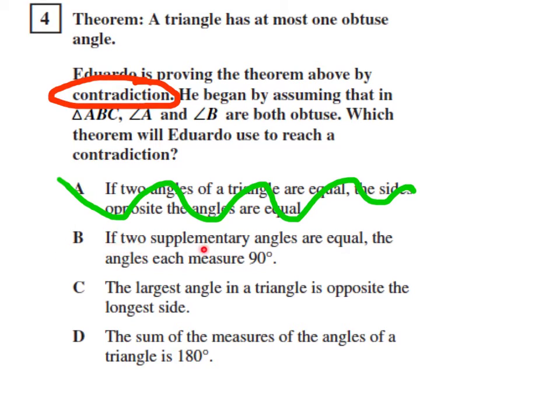Here, B, if two supplementary angles are equal, the angles each measure 90 degrees. Okay, that is a true statement. There's nothing wrong with that. But, again, its usefulness in helping us arrive at a contradiction is limited at best.